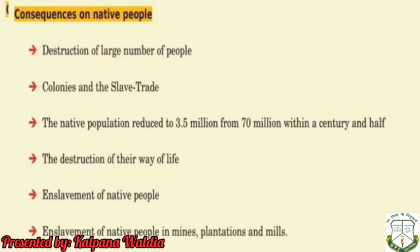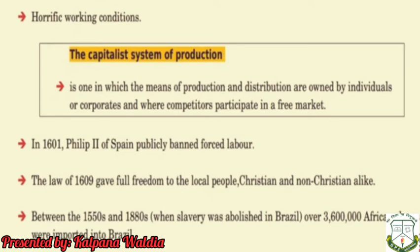Consequences on the native people: after the influence of European powers, the destruction of a large number of native people took place. Colonies and the slave trade began extensively. The native population reduced from about 70 million to 3.5 million within a century and a half. Their way of life was destroyed. Enslavement was practiced along with horrifying working conditions in mills and mines. The capitalist system of production began, owned by individuals or corporations competing in the free market.